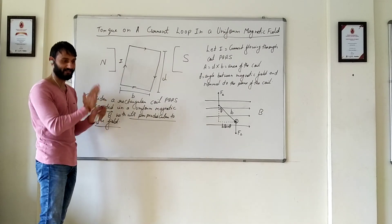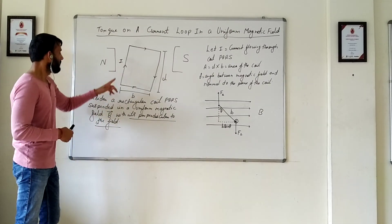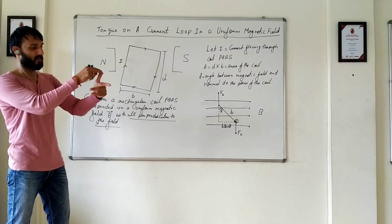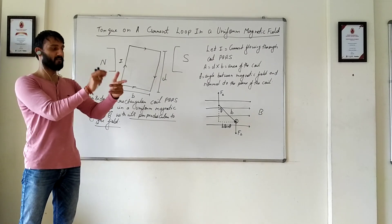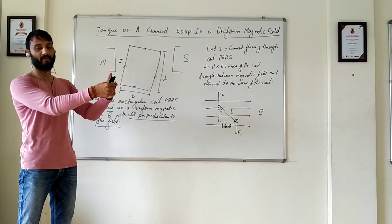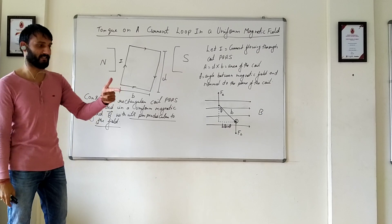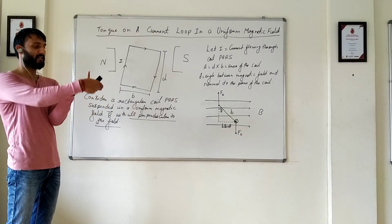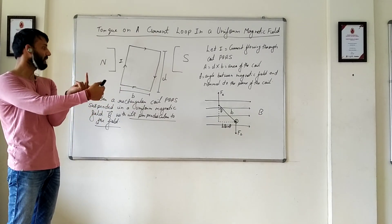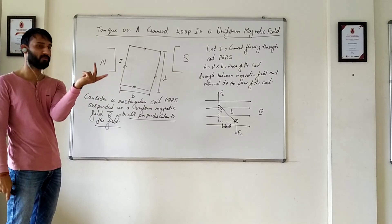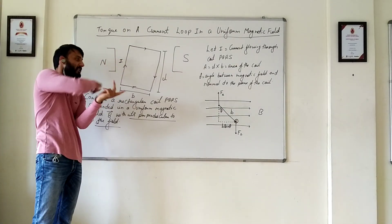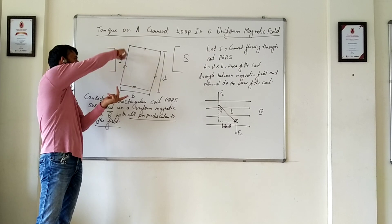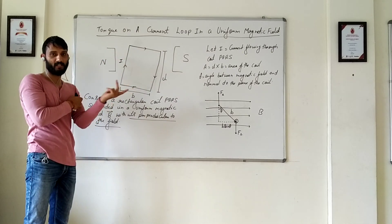It is not kept flat. So on this part, applying Fleming's left-hand rule: F is force, M is magnetic field, C is current — the current is going in the upward direction, the magnetic field is going in that direction, so the force on this part will be experienced in the inward direction.